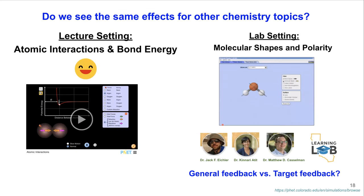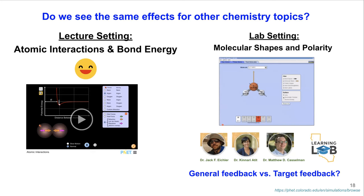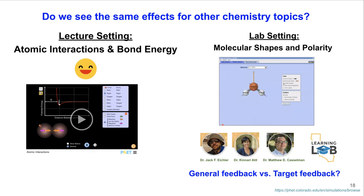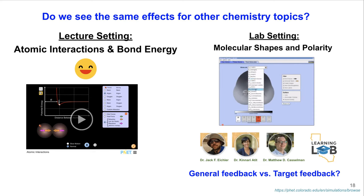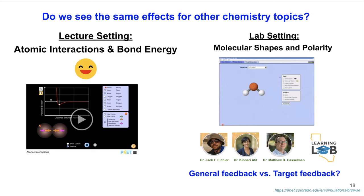We also wanted to know whether this worked for just one topic or others as well. We replicated a similar study design with other topics and in different settings: we implemented simulation activities related to atomic interactions and bond energy in a lecture setting, and molecular shape and polarity in a lab setting. The molecular shape and polarity study was a collaboration with colleagues at UC Riverside, funded by the California Learning Lab. For that project, we recruited student volunteers from different chemistry classes to come to the laboratory and perform the simulation.